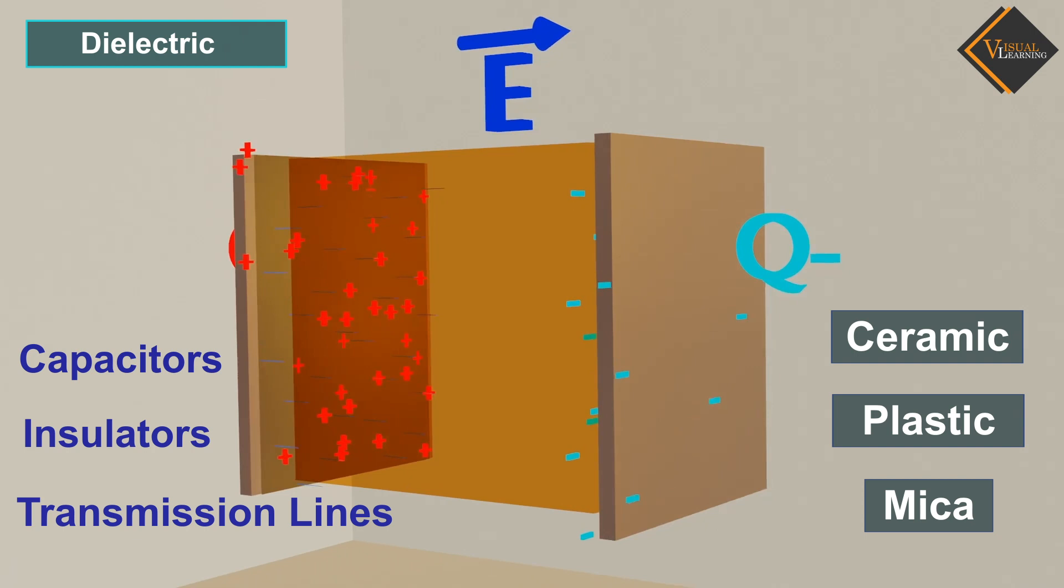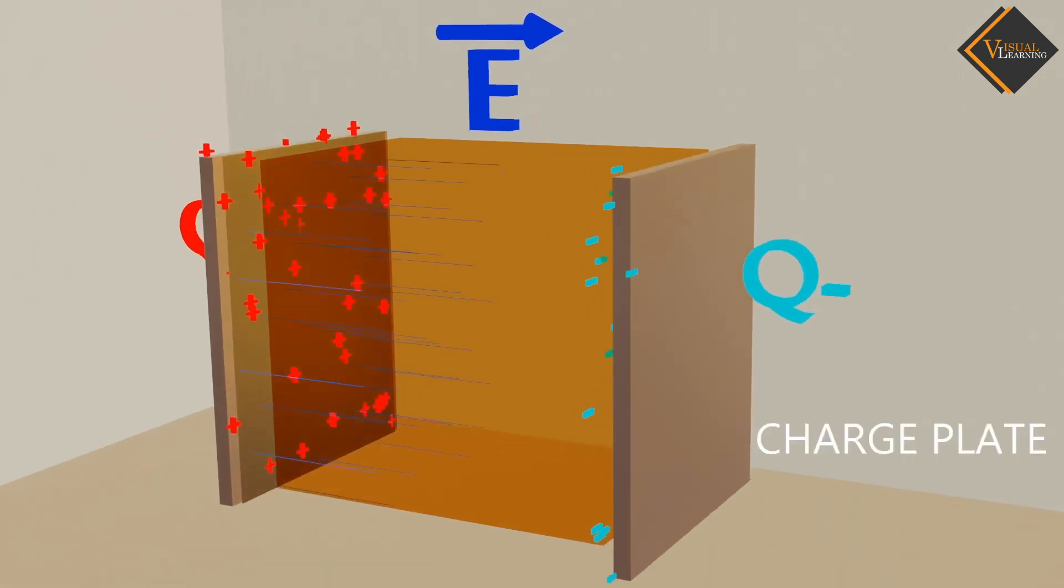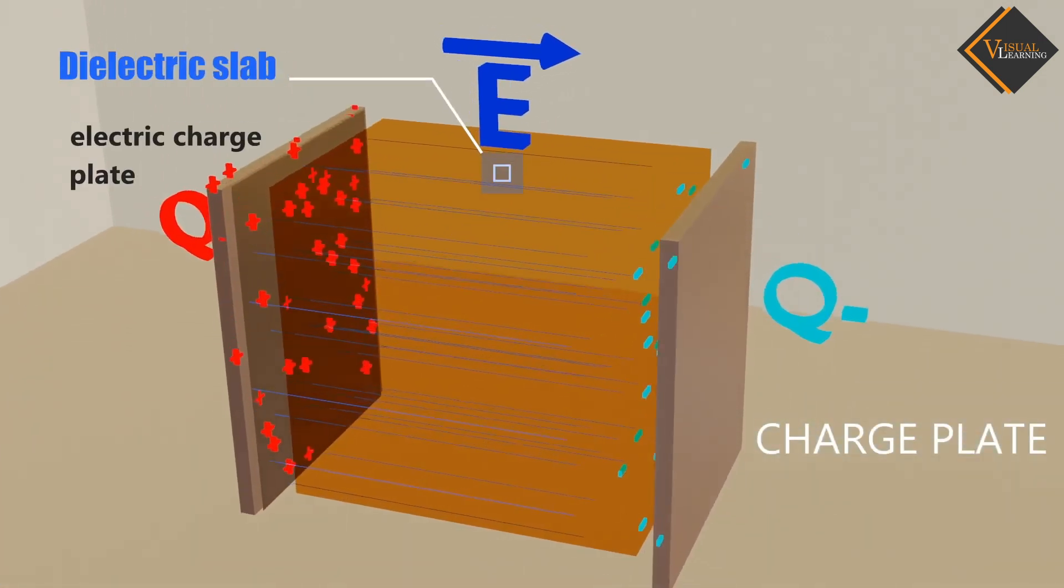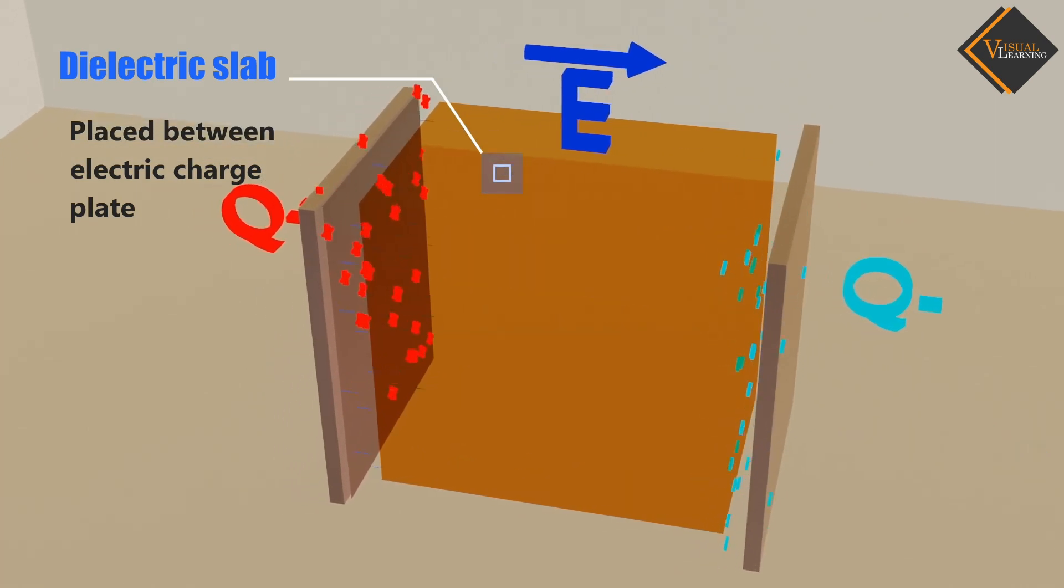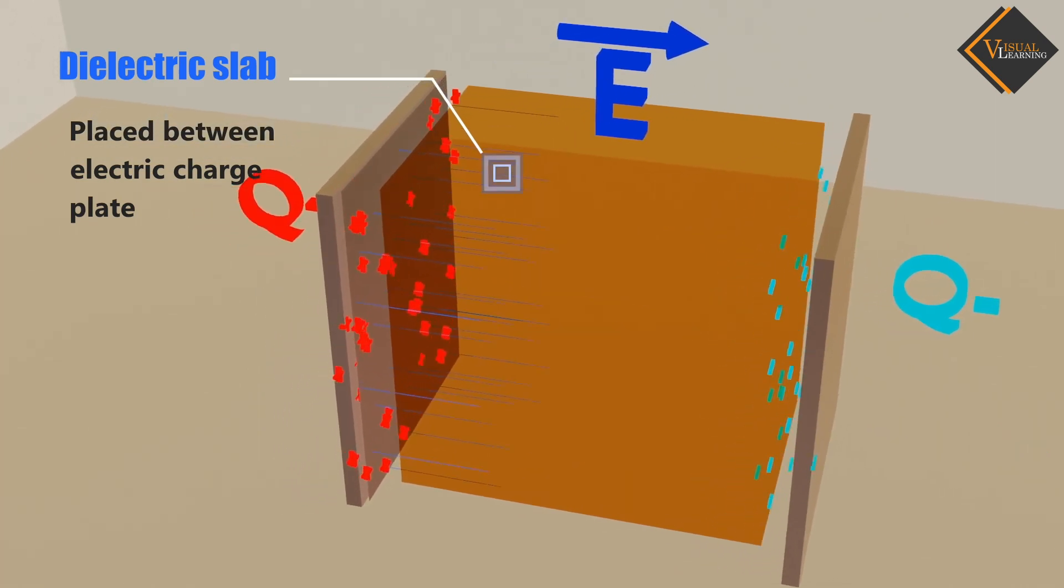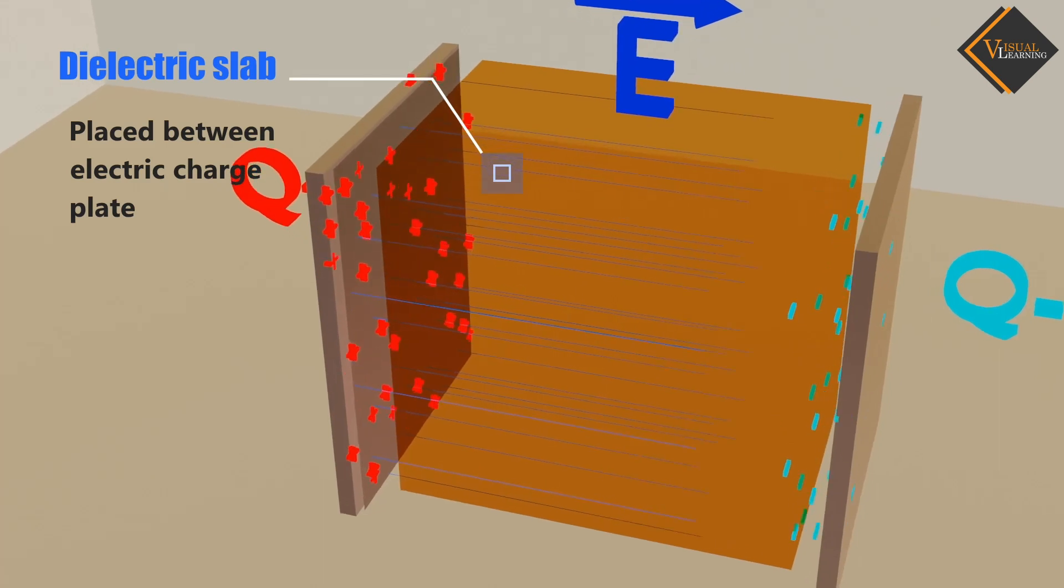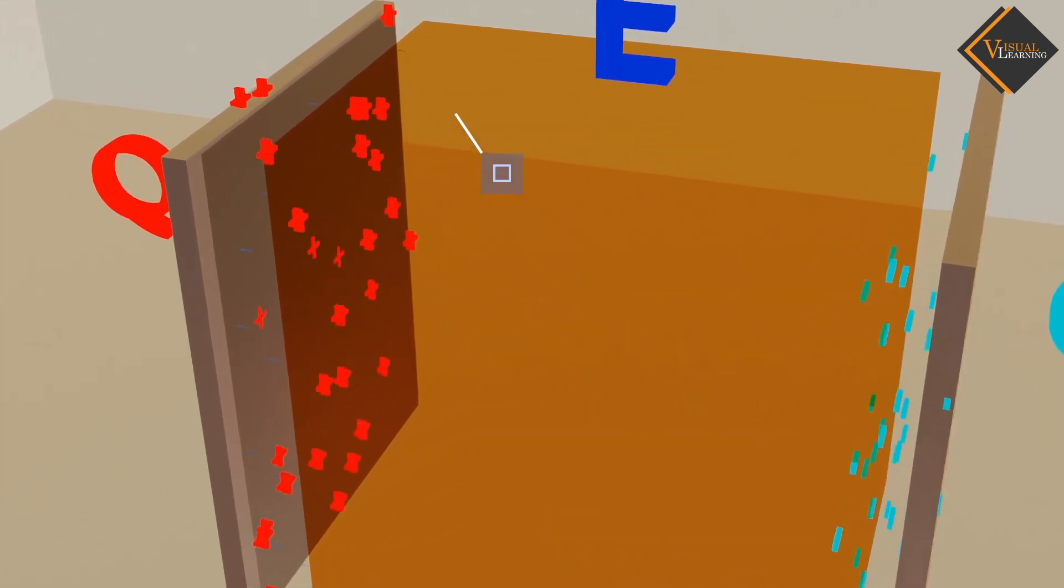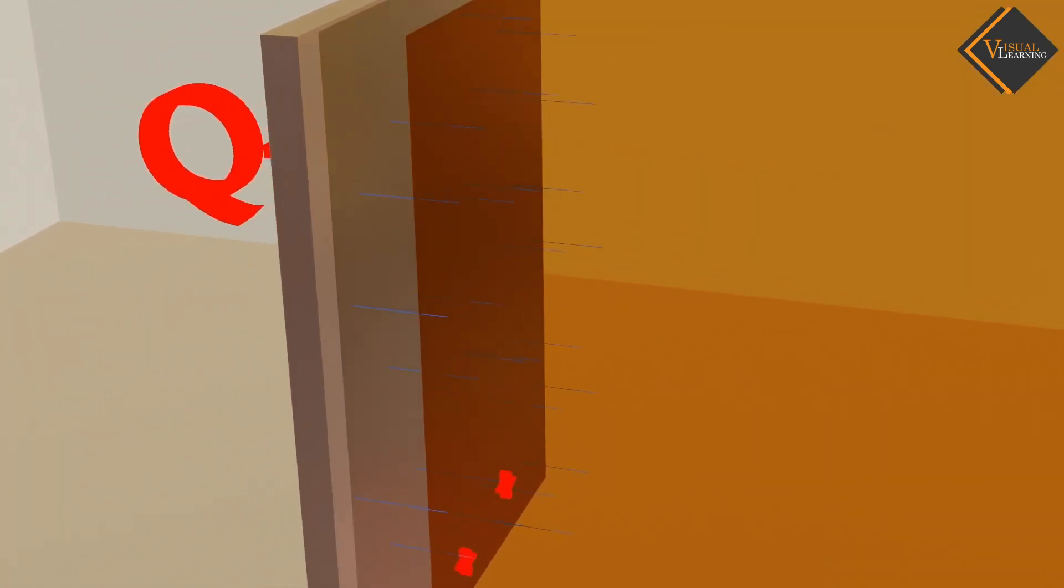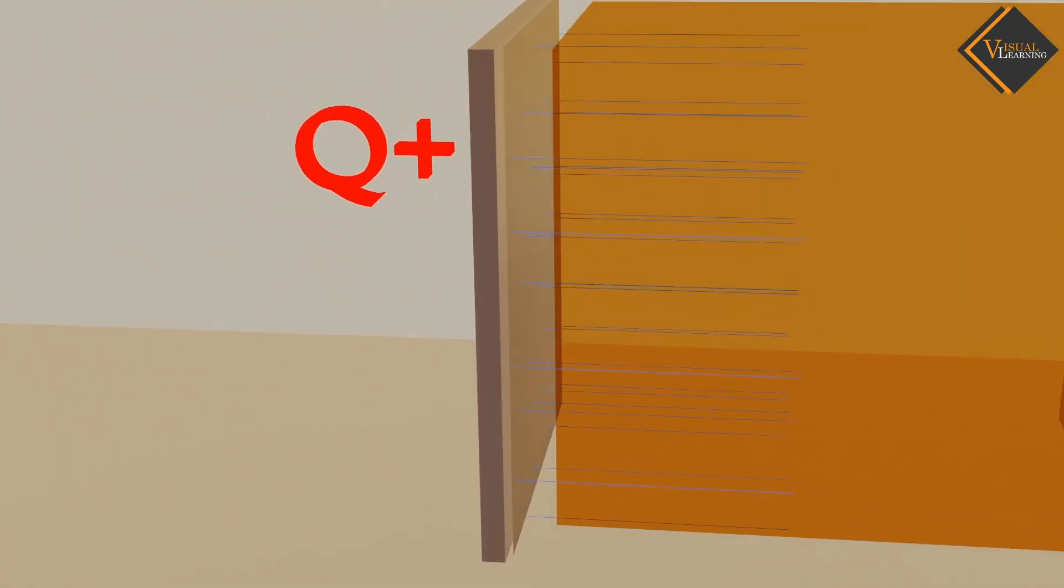Let's understand in details. In the video, we can see an example where a dielectric slab is placed in an electric field created by two charged plates. The electric field lines move from the positive plate to the negative plate through the dielectric slab.